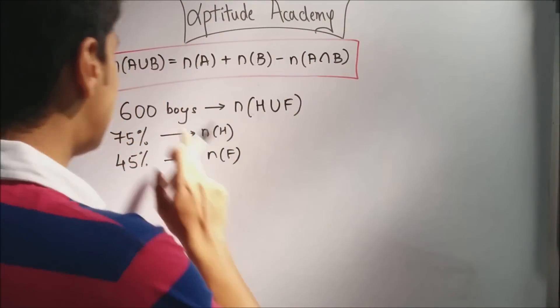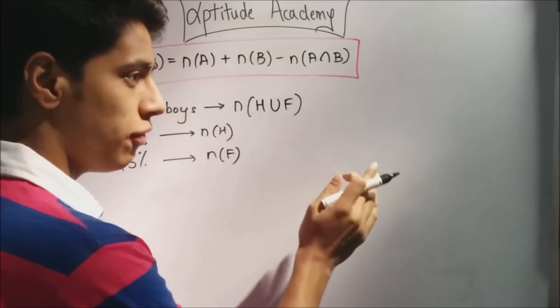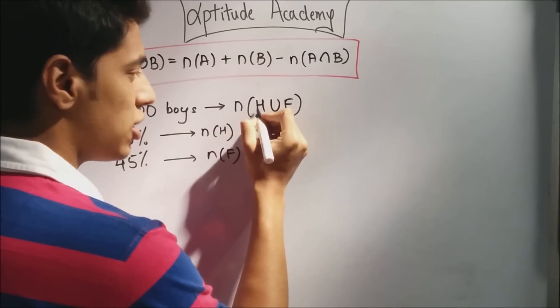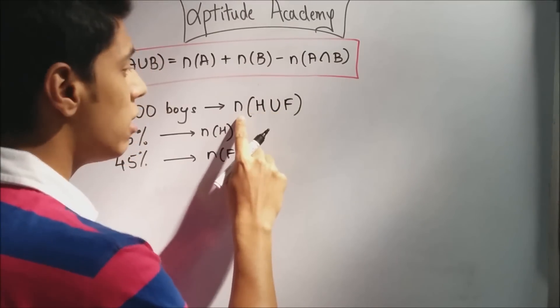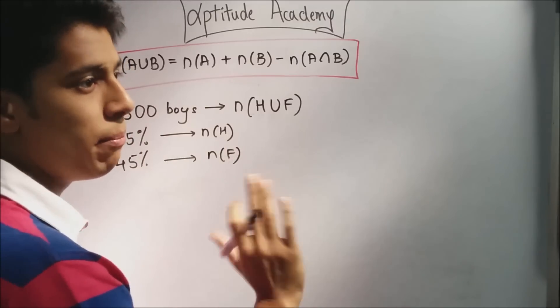Now, in problem 1, they've said that 600 boys play either hockey or football. So, if they play either hockey or football or both, they will come in n(A union B). Let's assign H as hockey and F as football. So, n(H union F) will be 600 boys, since either of them play a sport.